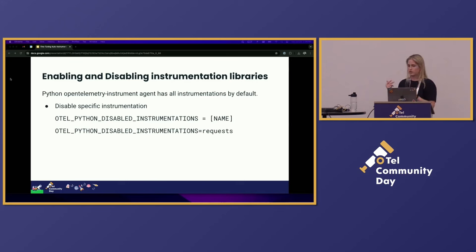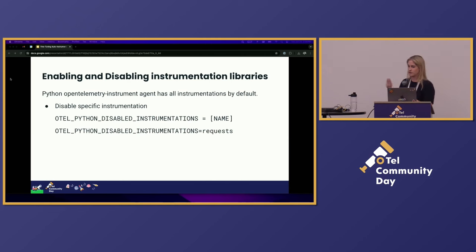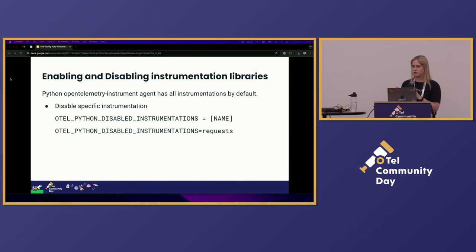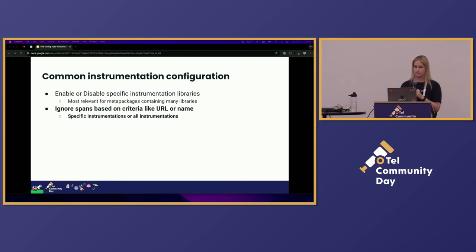When we look at Python, we also have something very similar: OTEL_PYTHON_DISABLED_INSTRUMENTATIONS equals whatever library you don't want, such as 'requests'. It's a pretty generic thing you're going to see through most of the languages — this is a pretty common configuration change.